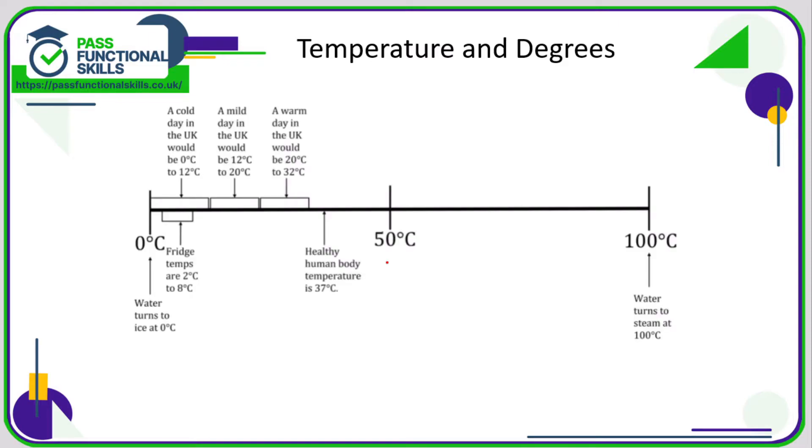If we take a look at a scale of zero degrees Celsius to 100 degrees Celsius: boiling point, when water turns to steam, is 100 degrees; water freezes and turns to ice at zero degrees. The temperature of the human body should be 37 degrees. When you have a fever, your temperature will go up to 38 or 39 degrees, which is obviously not healthy, but healthy body temperature is 37 degrees.